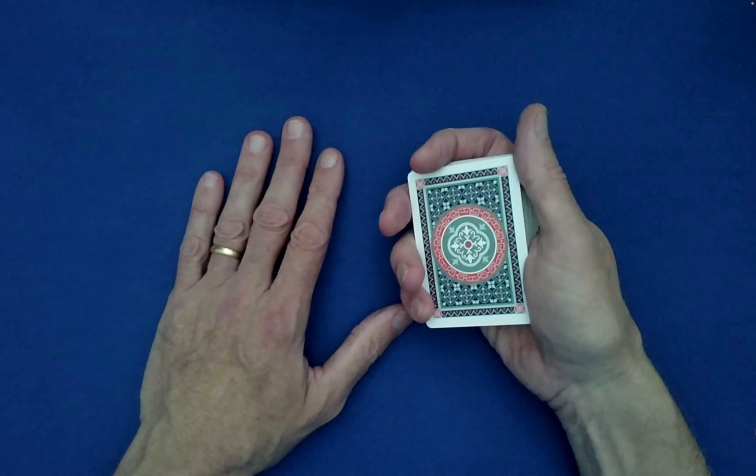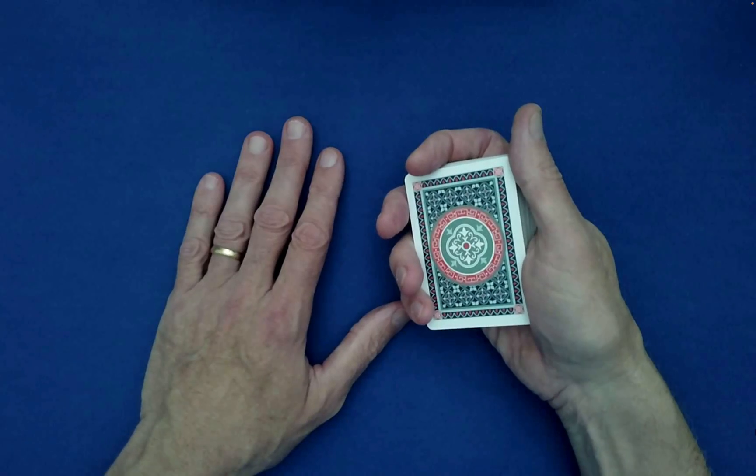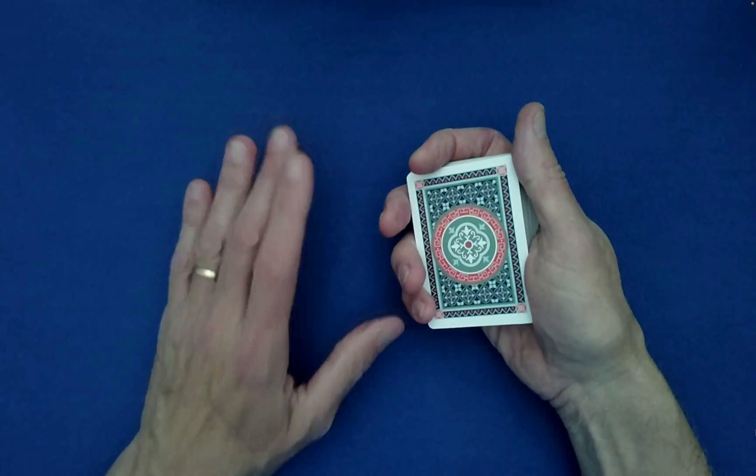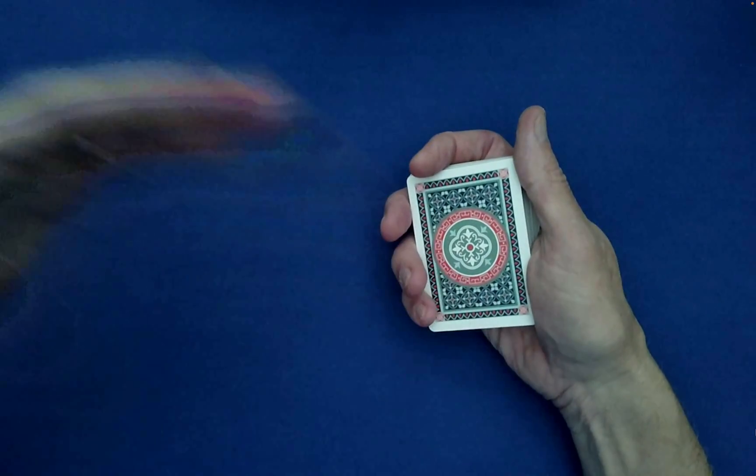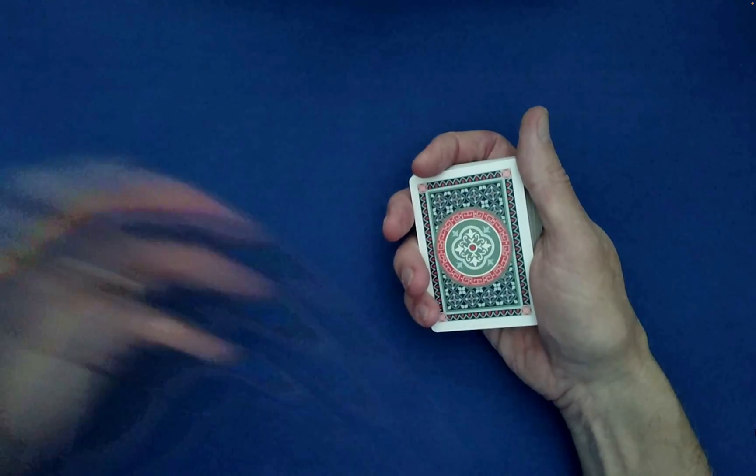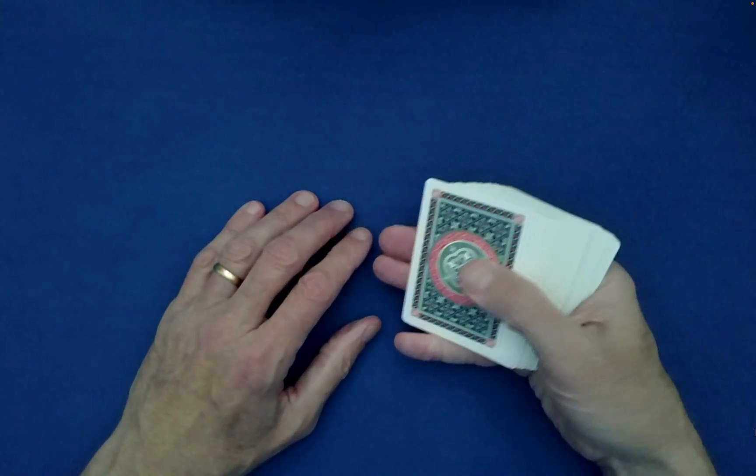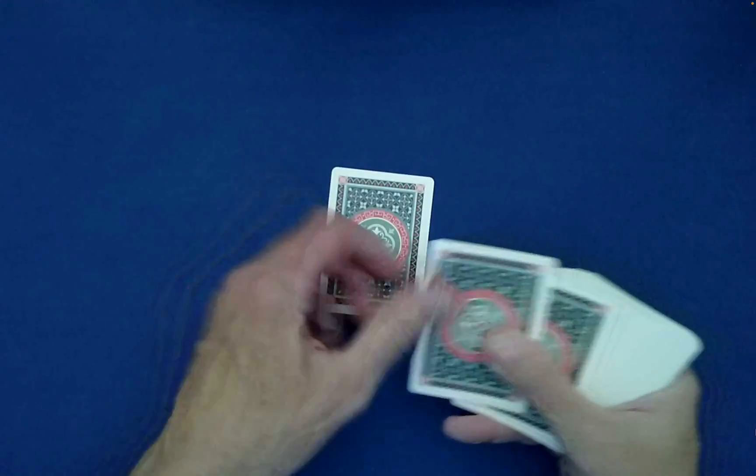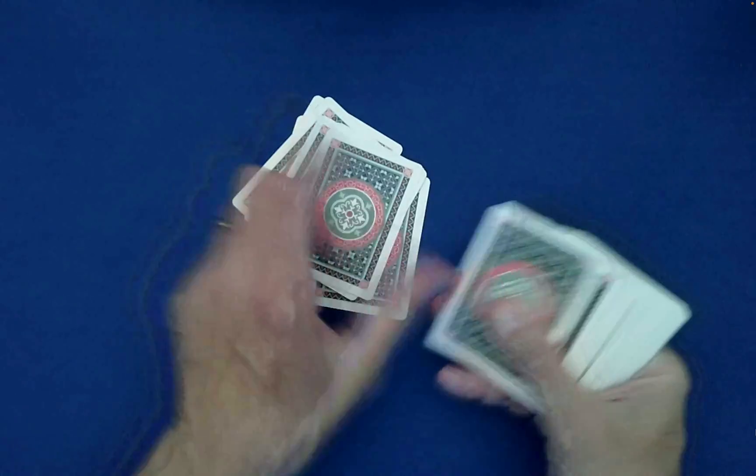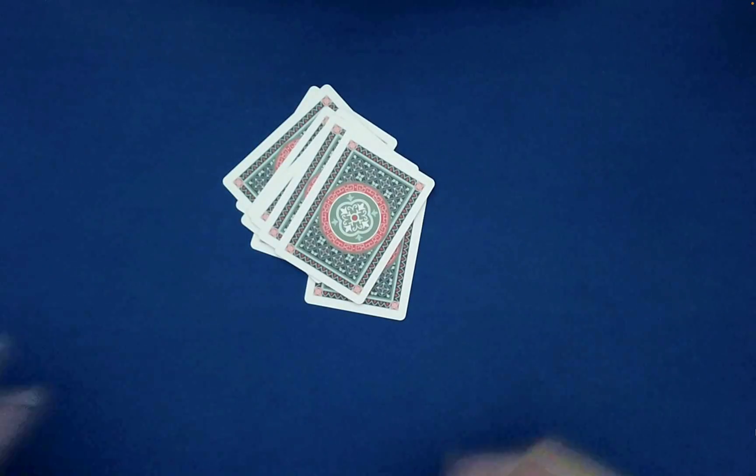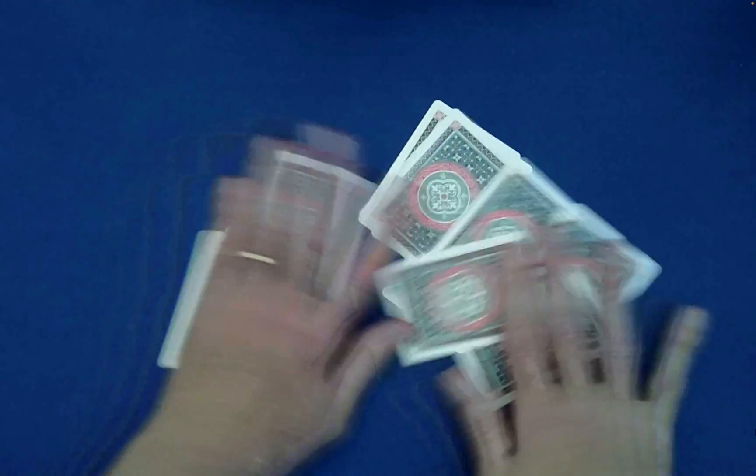Have them randomly choose anywhere between 8 and 13 cards. Since I don't have a spectator here, I'll have to make a decision myself. Let's go with 11: one, two, three, four, five, six, seven, eight, nine, ten, eleven. Then the spectator's free to mix the cards further if they would like.